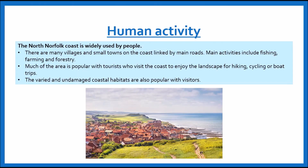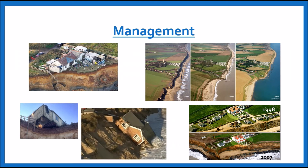So in terms of human activity, North Norfolk is actually used by a lot of people. There are many villages and small towns in the area, which you saw on the map earlier, and it's all connected by main roads. Those main roads have to be protected because fishing, farming, forestry and lots of businesses in the area rely on them and need access to those villages and towns. The area is also known as an Area of Outstanding Natural Beauty, so it's very popular with tourists who visit for hiking, cycling and boat trips. Because of how undamaged it is, the habitats are also really popular with visitors, like the seals you saw on Blakeney Point Spit.